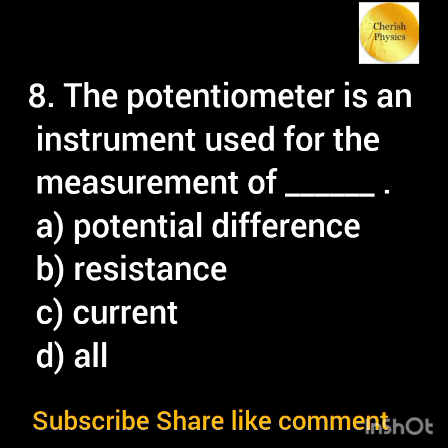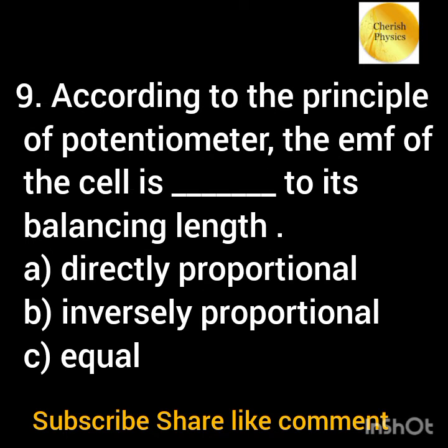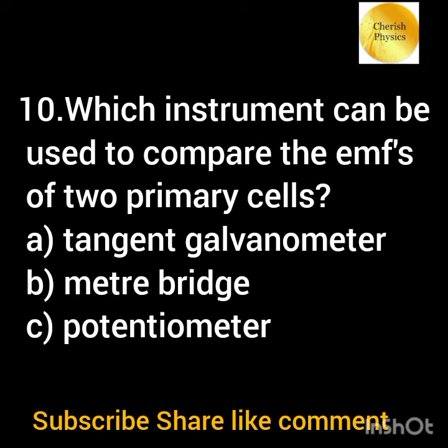The potentiometer is an instrument used for the measurement of dash. According to the principle of potentiometer, the EMF of the cell is dash to its balancing length. Which instrument can be used to compare the EMFs of two primary cells?